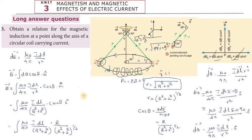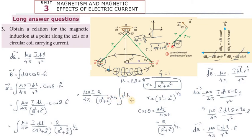Now: B = (μ₀/4π) × i × R / (R² + Z²)^(3/2) × ∫dL × k̂. Since all other terms are constant, they come out of the integral. The integral of dL over the full circumference of the coil is simply 2πR.